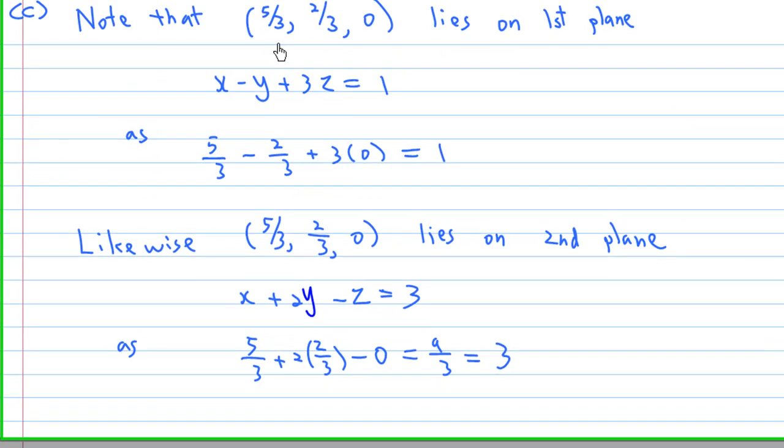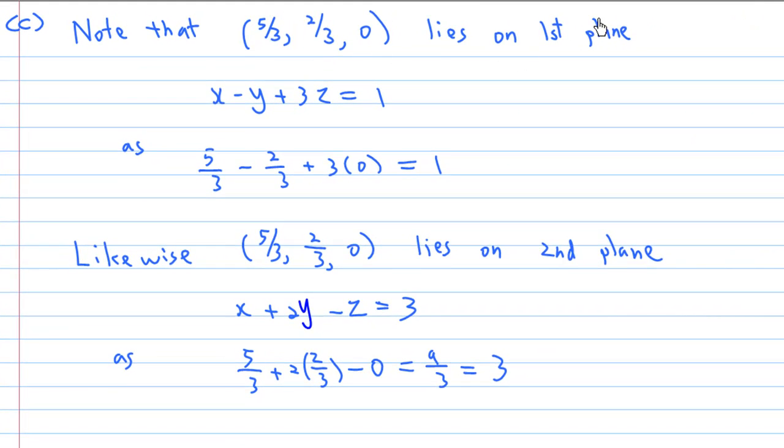First we note that (5/3, 2/3, 0) lies on the first plane equation x minus y plus 3z equal to 1. Because when you substitute x equal to 5/3, y equal to 2/3, and z equal to 0, you find that it satisfies the first equation.